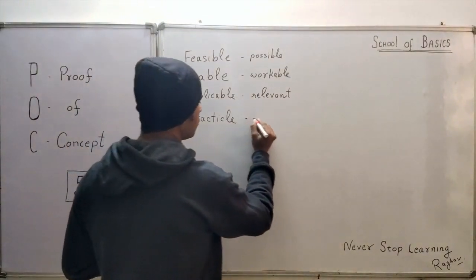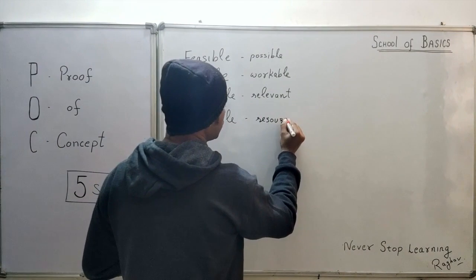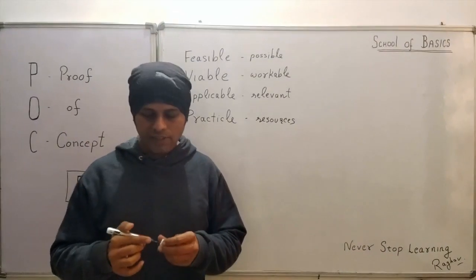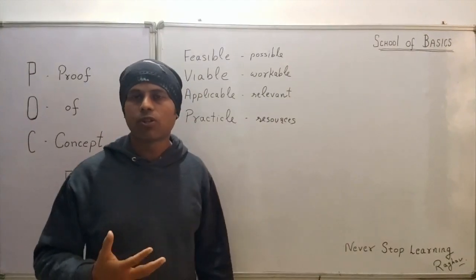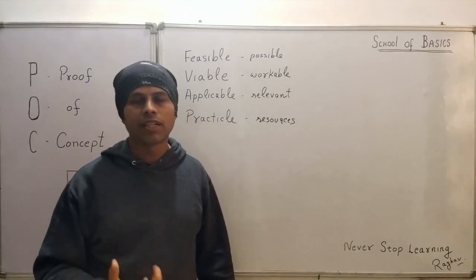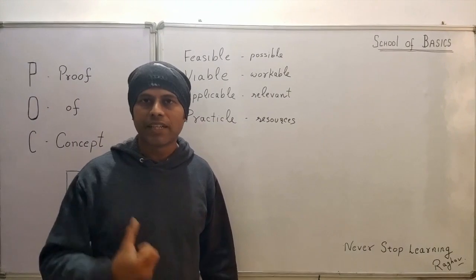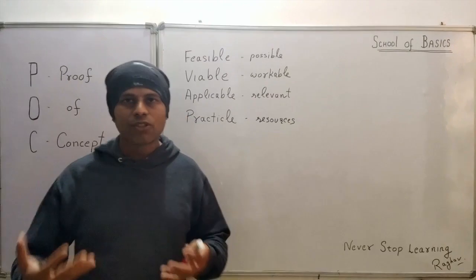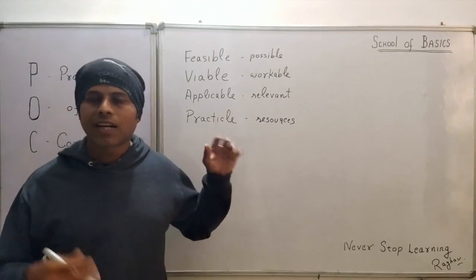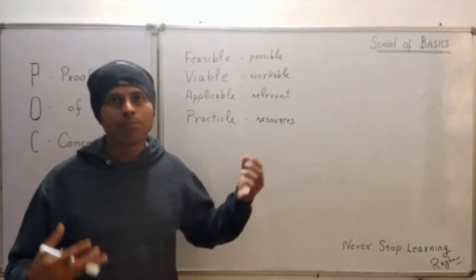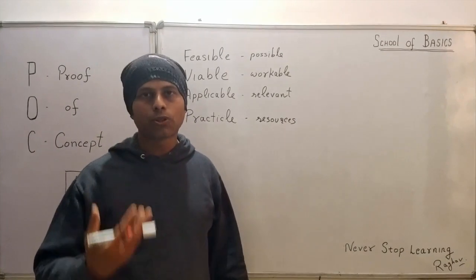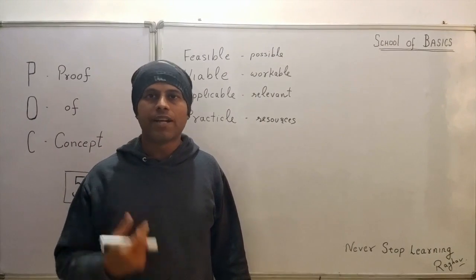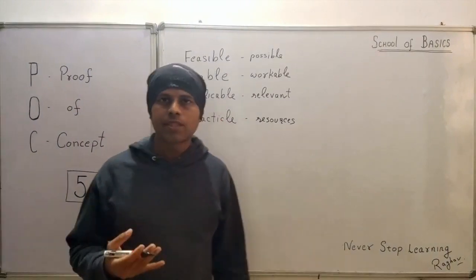When we talk about practical, it covers resources, infrastructure, and application. Suppose you find a very good solution — but is it practical for you? Do you have the resources to work on it? Do you have the people who can maintain it? You have to check infrastructure and everything. These four areas are kind of synonymous but are the basic things you must check for any new solution or idea you are trying to implement.